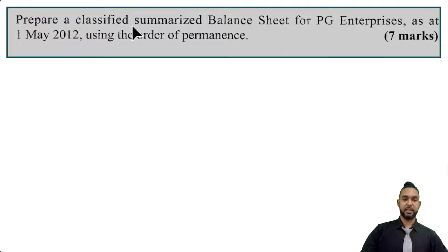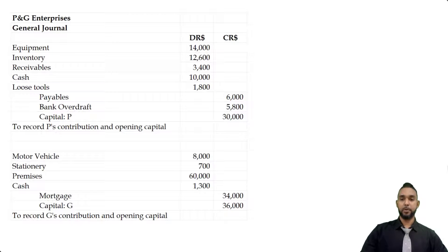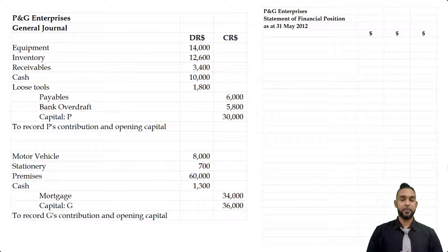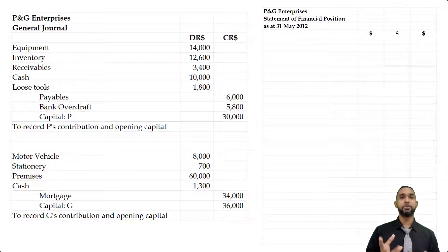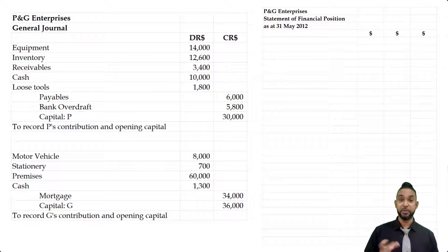Part two says: prepare a classified, summarized balance sheet for PG Enterprises as at 1st May 2012 using the order of permanence — seven marks. So a classified balance sheet, or as we know it now, a statement of financial position. Please remember to properly head up all your statements: name of the entity, name of the statement, and the period to which it applies. Permanence means long lasting, so we're going to start with non-current assets first, then current assets. I'm going to show you two presentations — the net assets presentation (assets minus liabilities equals capital) and the financing version (assets equals capital plus liabilities).